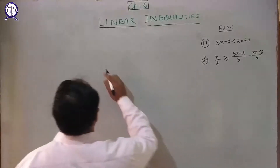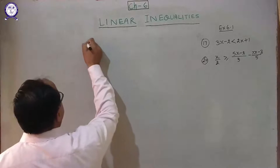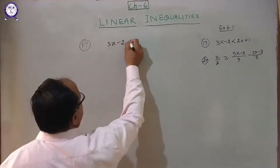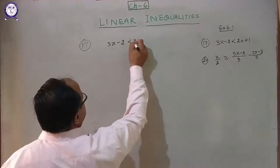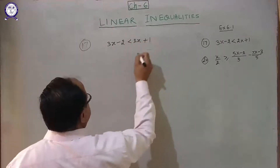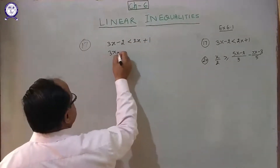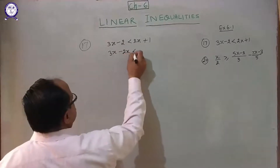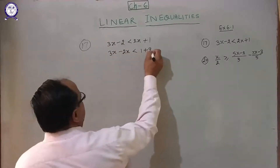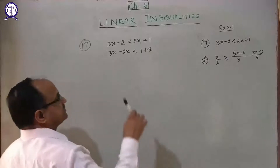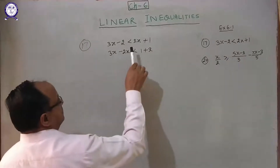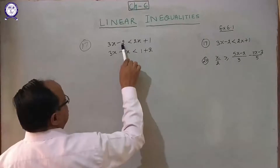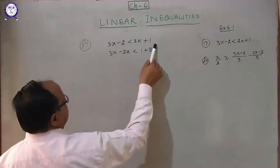Question number 17: 3x minus 2 less than 2x plus 1. We rearrange: 3x minus 2x, shifting the x term to the left hand side and the constant to the right hand side.